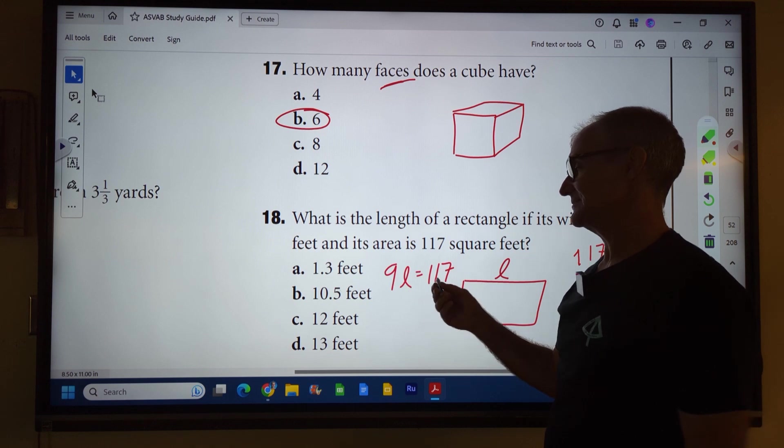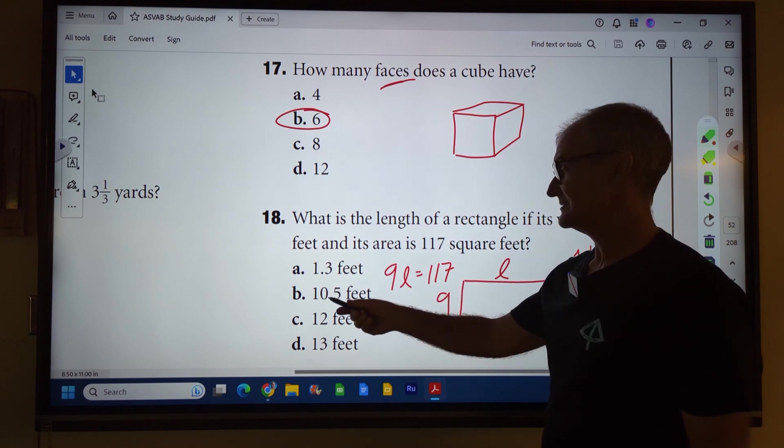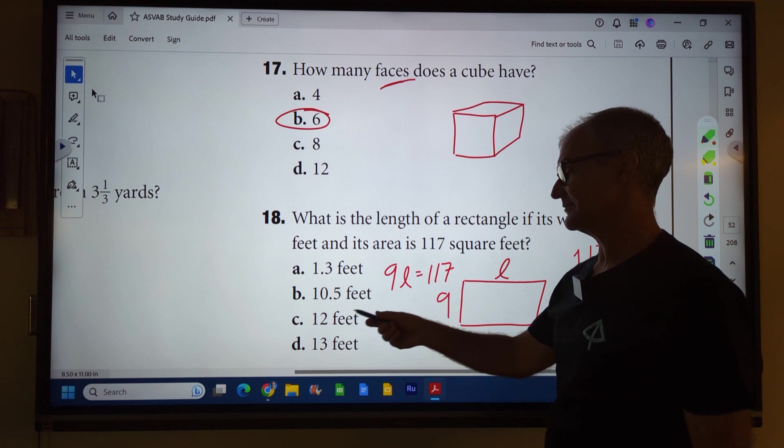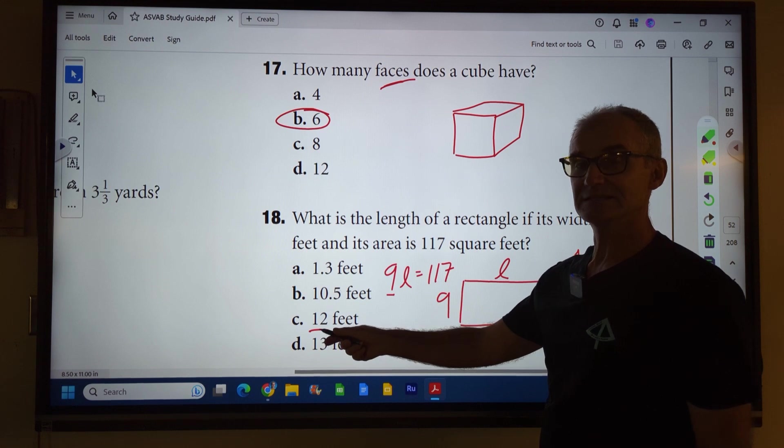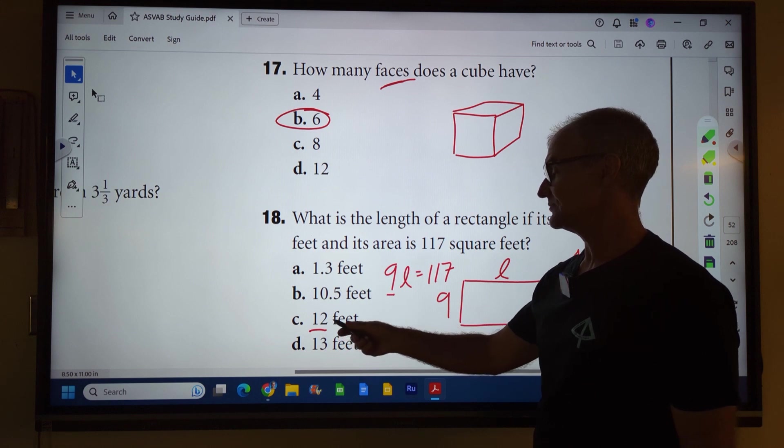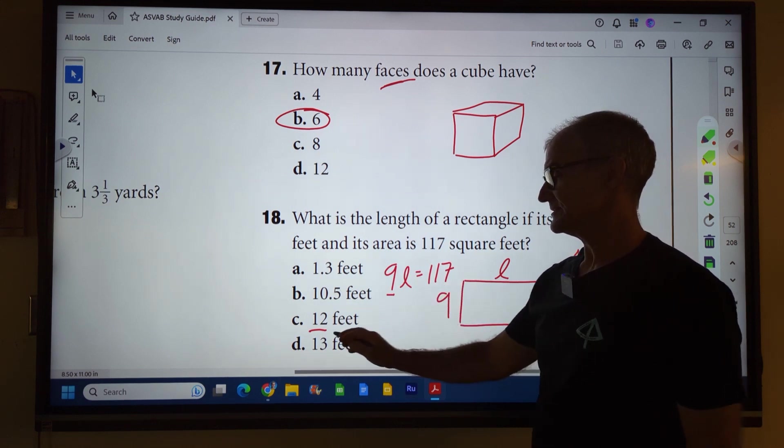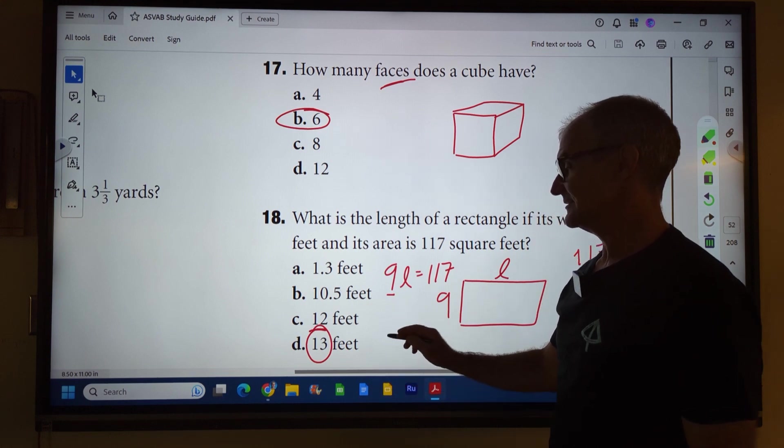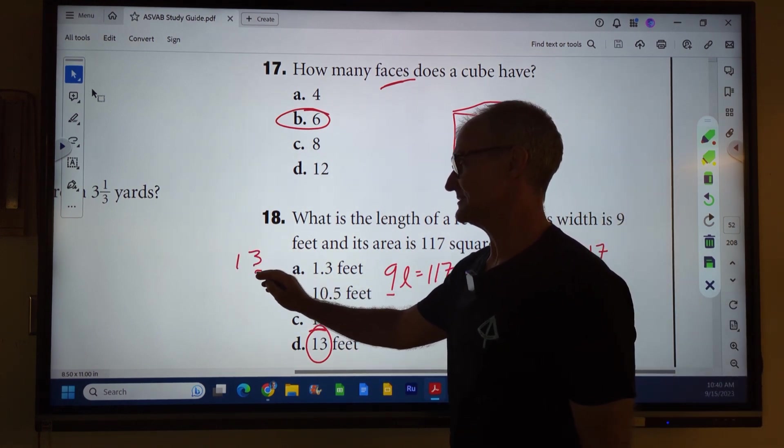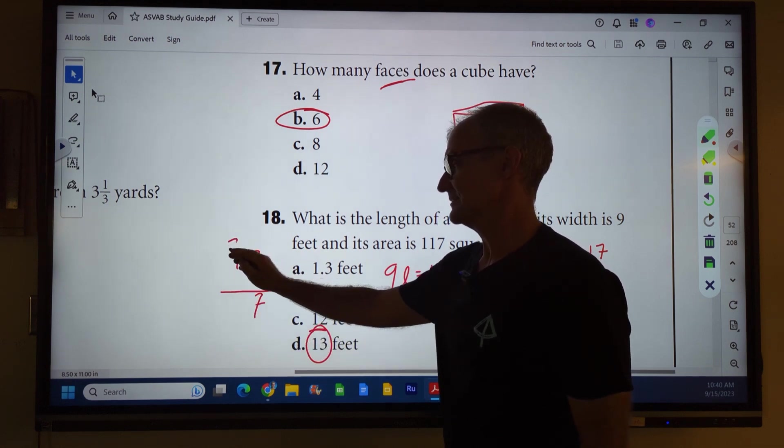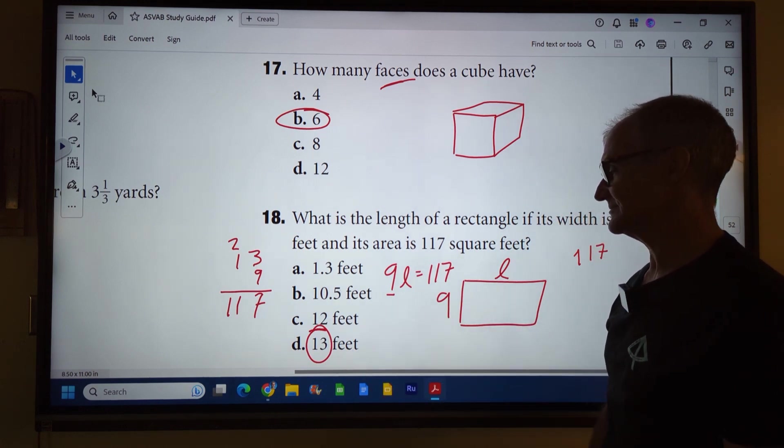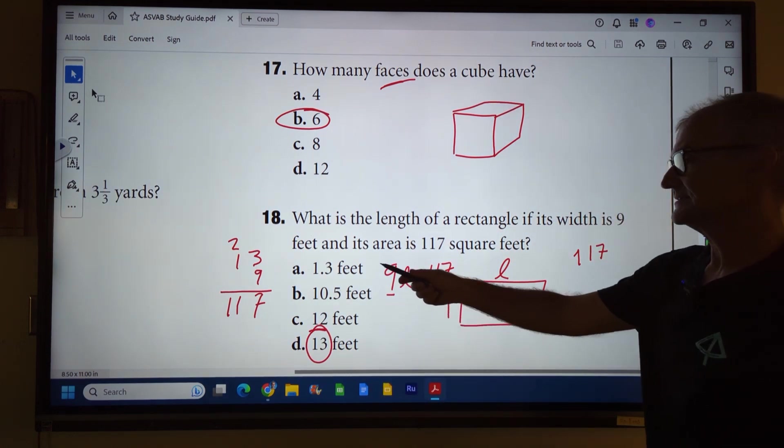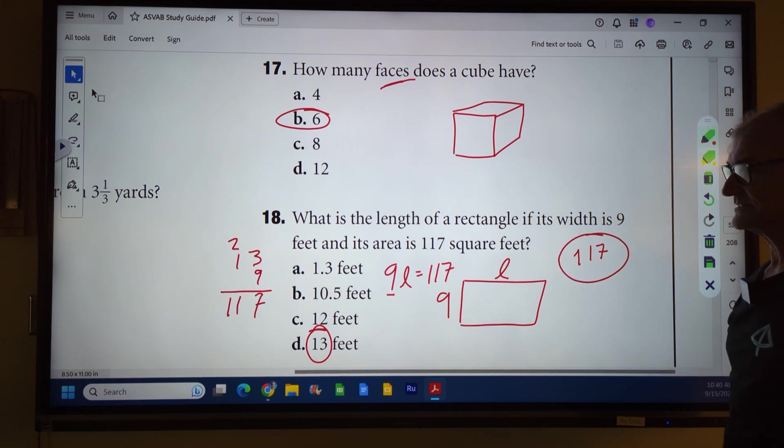I could try and just pick answers and plug them in. One times nine is going to be nowhere near over a hundred. Ten times nine is going to be like 90 plus. 12 times nine: nine times 10 is 90, plus nine times two, 18. 90 and 18 is 108, still too low. So it looks like it's going to have to be 13. Let me just double check that. 13 times nine is 27, nine times one, nine, 10, 11, gives me 117. Correct answer, answer D. 9 times 13 gives me that area of 117.